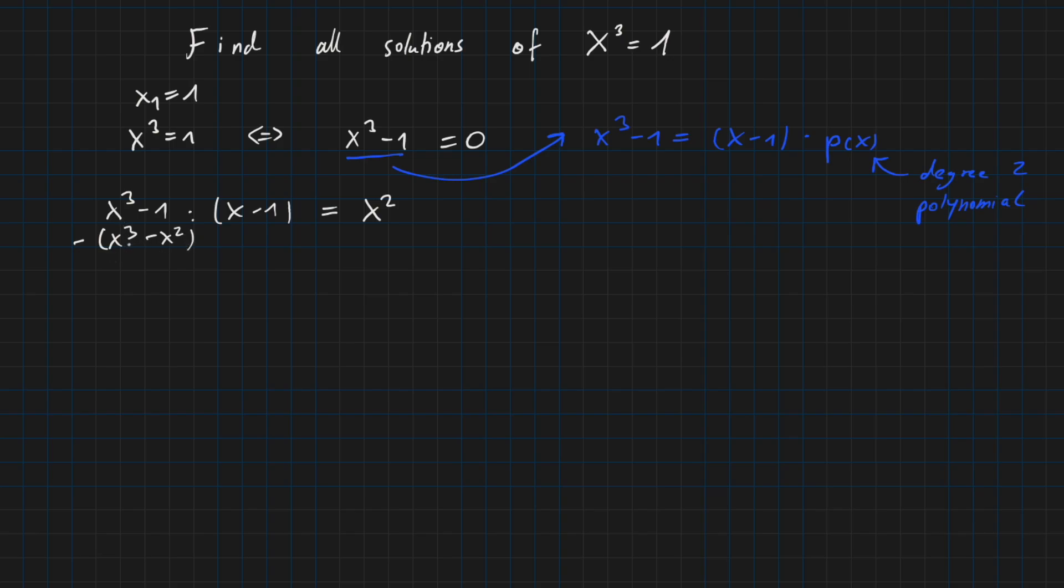And now we are subtracting this polynomial from our original one, which then results into 0 and plus x squared. And now we are asking ourselves which polynomial times x equals x squared, because again our goal is to remove this x squared. It is plus x.